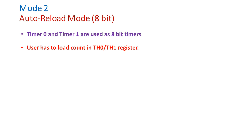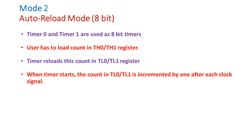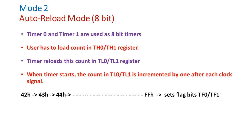The timer reloads this count into the TL0 or TL1 register. When the user starts the timer, the count stored in TL0 or TL1 is incremented by 1 after each clock cycle until it reaches FFH. For example, suppose we have stored 42H in the TH register — the timer will copy this value into the TL register and 42H will be incremented by 1 after each clock cycle.